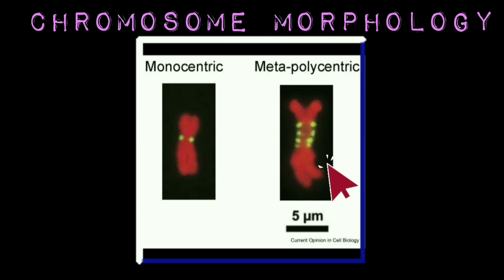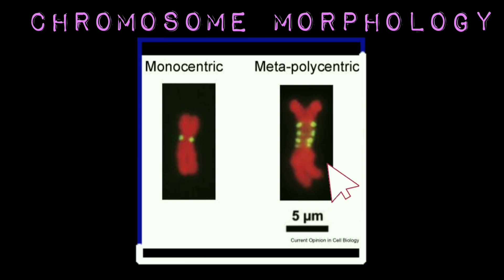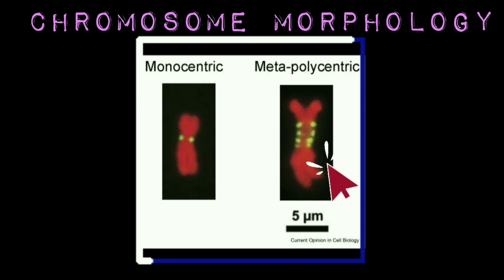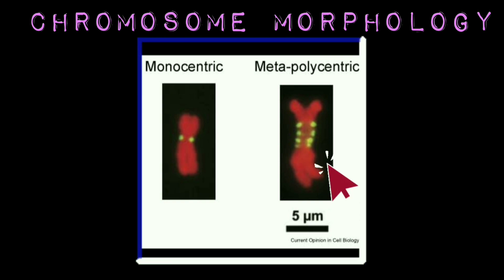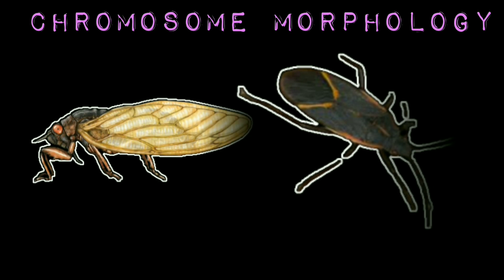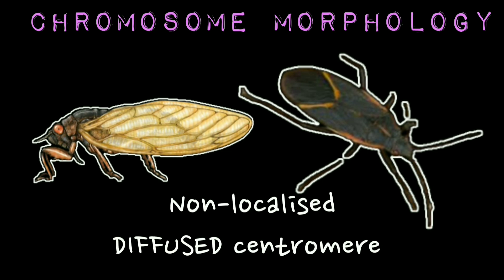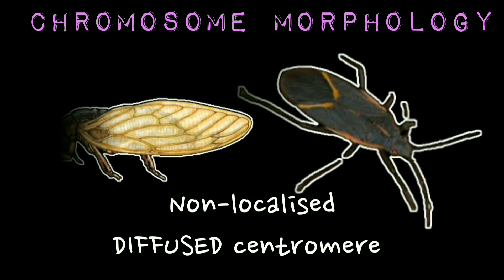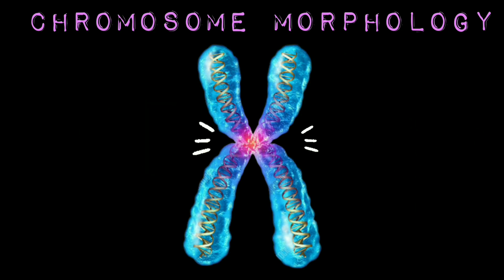In both monocentric and polycentric chromosomes, the centromeric property is confined to one or definite points of the chromosomes, so such chromosomes are referred to as localized. In most homopteran and hemopteran insects, the centromeric activity is non-localized and spread over the entire chromosome length.